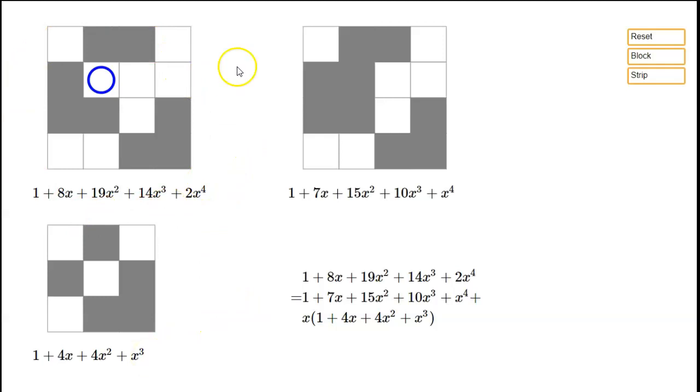So how do we get back the root polynomial of the original thing? What you do is you take the root polynomial of the smaller board that you obtained by stripping, multiply it by x, and then you add on the root polynomial of this board here. And so if we do that, we take this root polynomial here plus x times this one, you find that what you get is 1 plus 8x, 19x squared, 14x cubed, 2x to the fourth, which was the root polynomial of the original board.